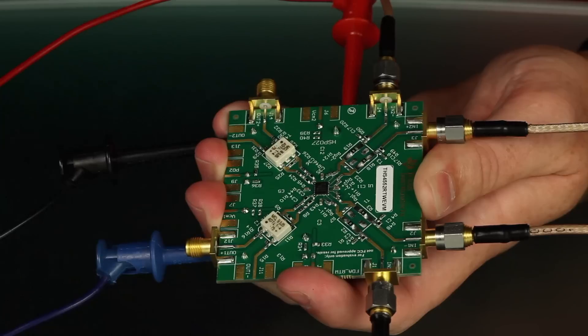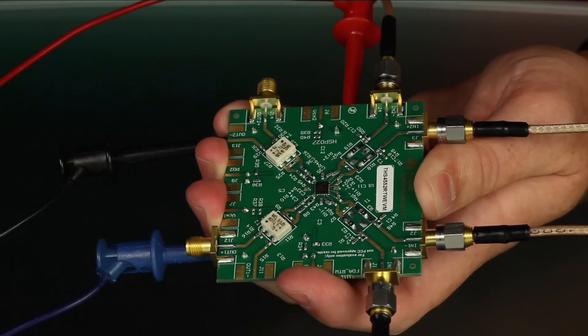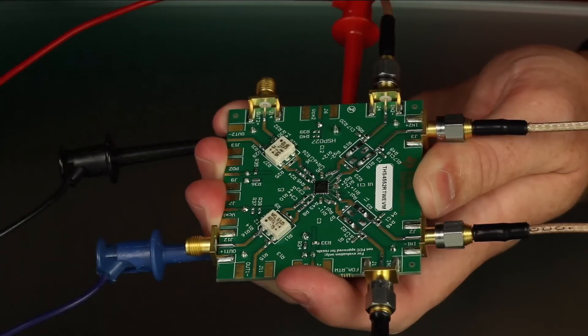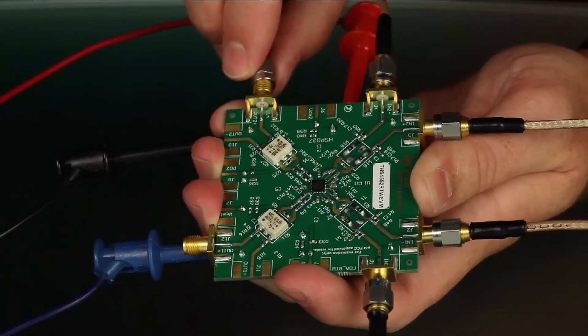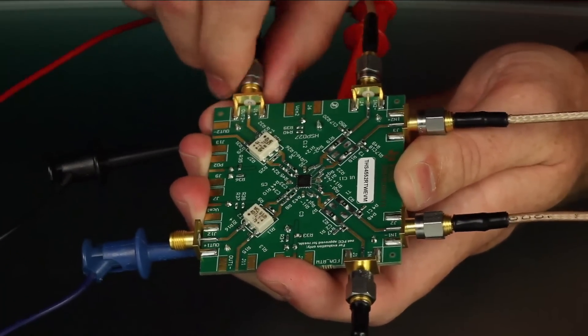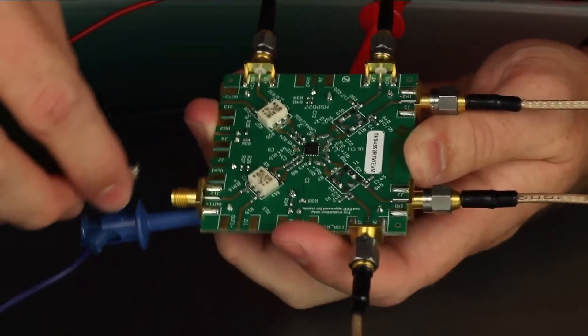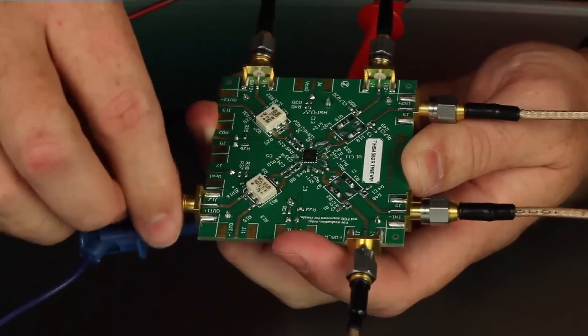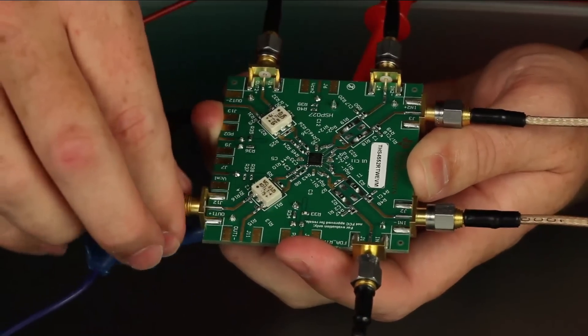The EVM comes configured to have a single-ended output with 50 ohm termination for both channels. This output is available on the OUT1 plus and OUT2 plus SMA connectors on the board. SMA cables can be connected to these terminals to route the signal to test equipment or to another circuit board.